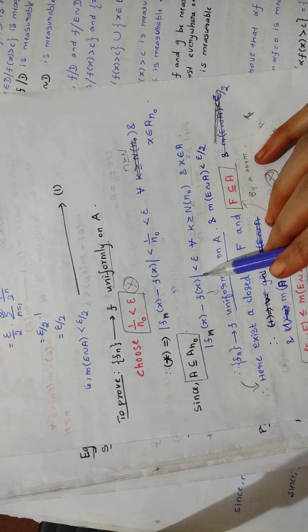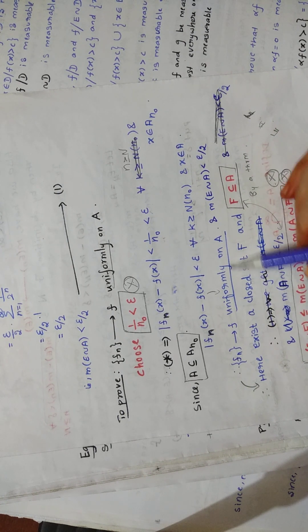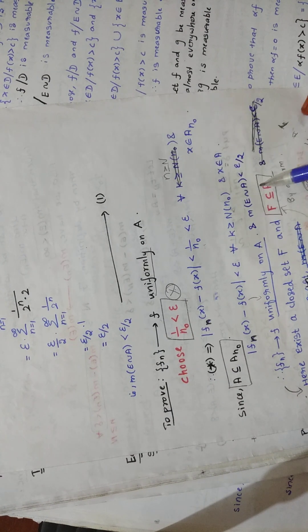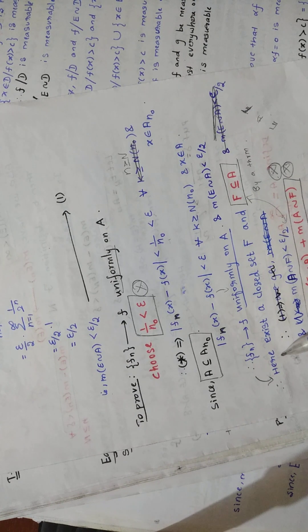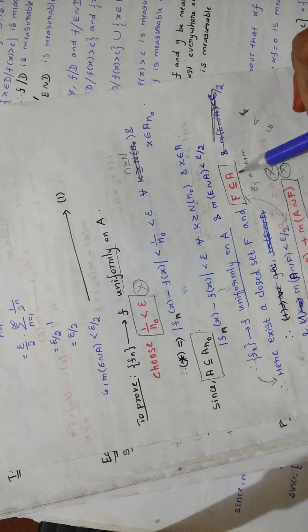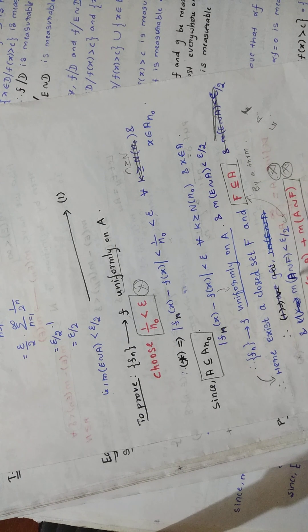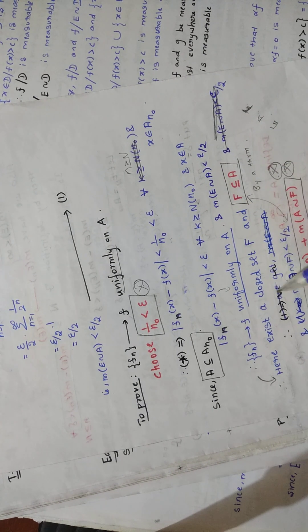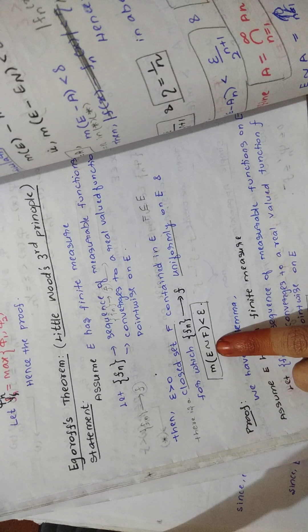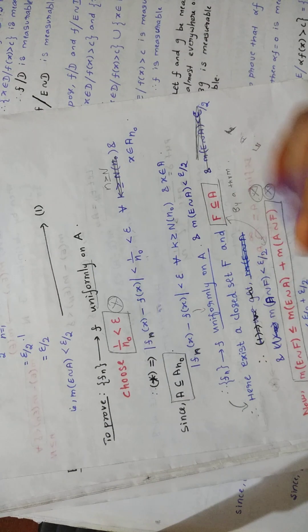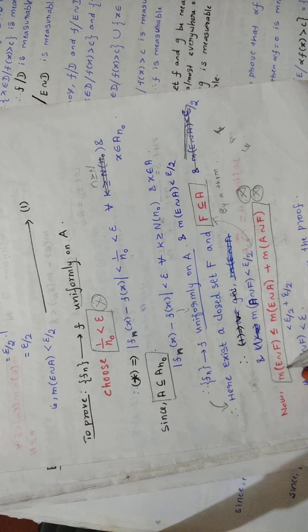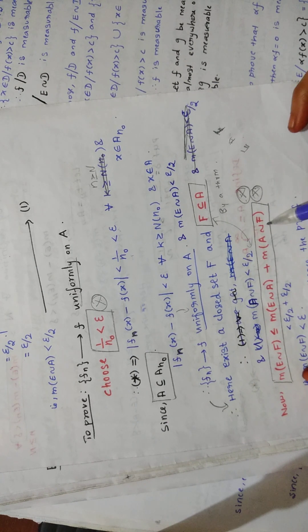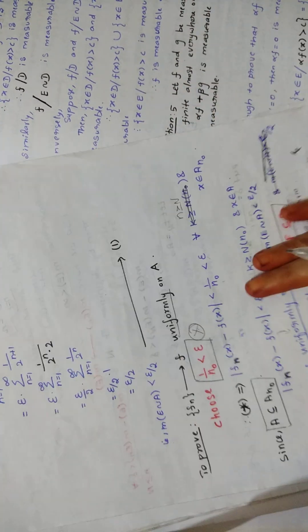Therefore from this, this is the uniform convergence definition format, so you can say F_n converges to f uniformly on A. Now, if these two conditions hold, then by a theorem there exists a closed set F which is a subset of A, and M(A \ F) < ε/2. Now you have to find M(E \ F). We have M(E \ A), but we want M(E \ F). Using the triangle inequality: M(E \ F) ≤ M(E \ A) + M(A \ F). Substituting these values, you get M(E \ F) < ε. Hence the proof. The theorem comes to an end.